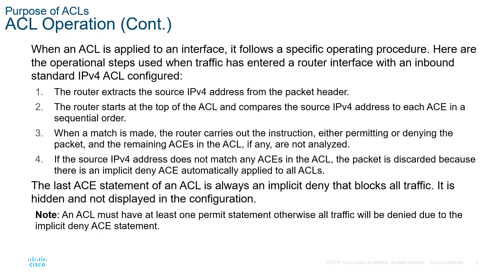When an ACL is applied to an interface, the router extracts the source IP from the packet header. Second, the router starts at the top of the ACL and compares the source address to each ACE in sequential order. When a match is made, the router carries out the instructions — either permitting or denying — based on the ACE. The remaining ACEs are not even analyzed; the first match is what is processed. If there is a source IP address that does not match anything, the packet is discarded because of the implicit deny at the very end.